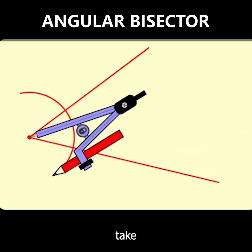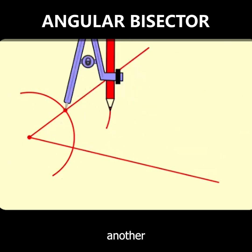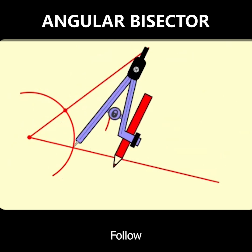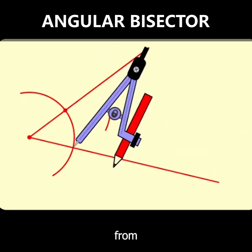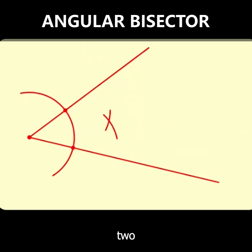Once you're done with that, take your compass to the first point where your line has intersected the arc and draw another arc. Follow the same thing from the other point, and this is how you'll get the two intersecting arcs at the center.